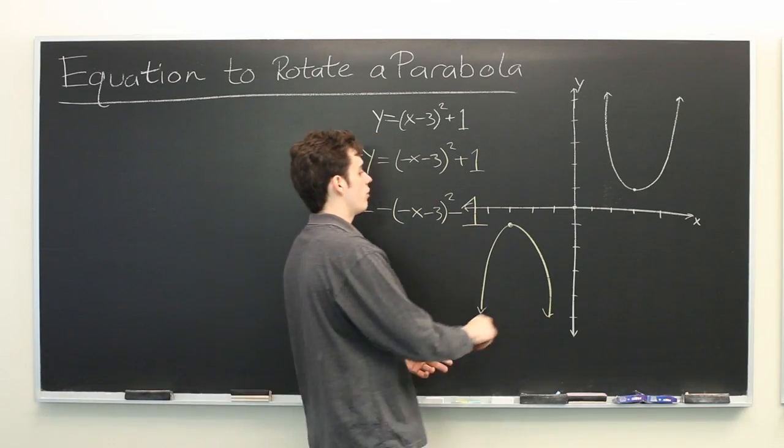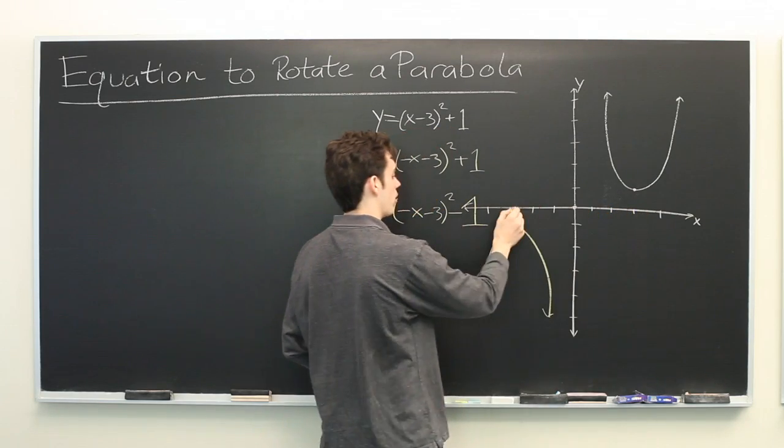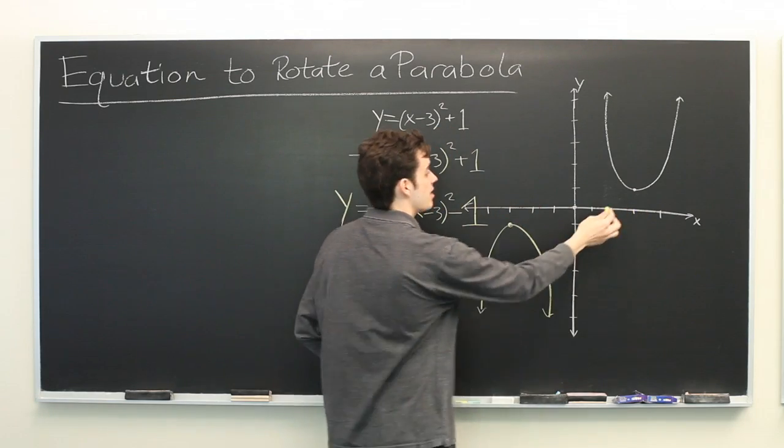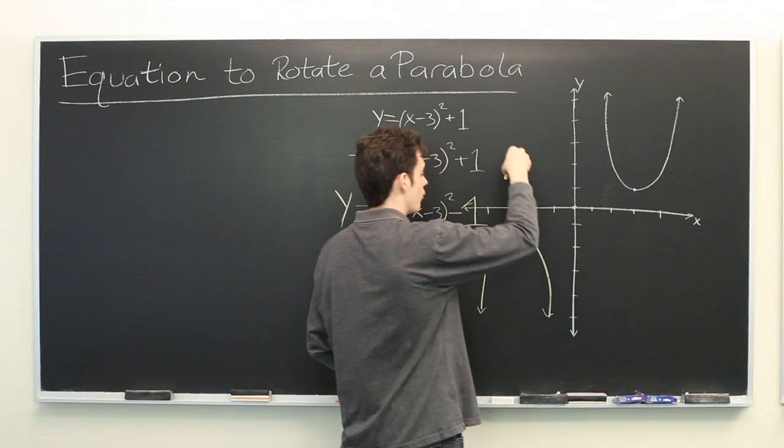So instead of shifting our vertex to the right 3 units, we are now shifting it to the left 3. And instead of moving it up, we are moving it down 1 unit.